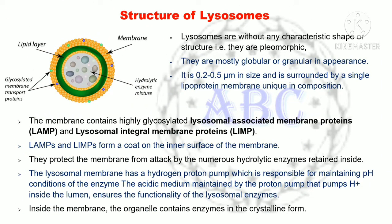In the structure of lysosomes, they are without any characteristic shape or structure — that is, they are pleomorphic or polymorphic in structure. They are mostly globular or granular in appearance. They are 0.2 to 0.5 micrometers in size and are surrounded by a single lipoprotein membrane unique in composition.